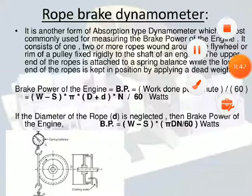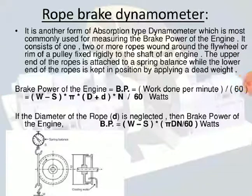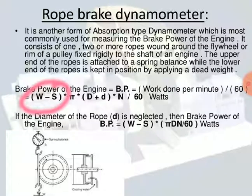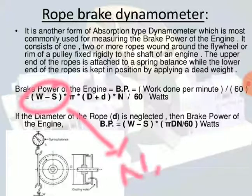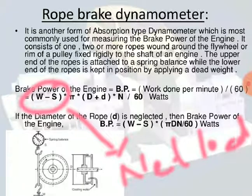The brake power of the engine is calculated using the formula: brake power = work done per minute ÷ 60. Work done per minute = (W − S) × π × (D + d) × N, where W minus S is the net load on the brake (W is the dead weight, S is the spring balance reading), and π(D + d) is the distance traveled per revolution.